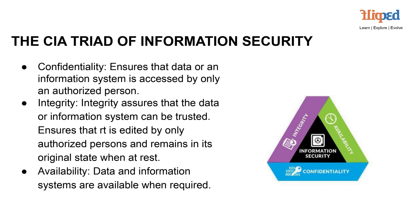As we dive deeper into the world of cybersecurity, let's explore a fundamental concept known as the CIA Triad of Information Security. Confidentiality stands as the first pillar — it guarantees that data or an information system is accessible solely by those who are authorized, guarding against unauthorized access. The second pillar, integrity, revolves around trustworthiness, ensuring that data and information systems are reliable and that only authorized individuals can make edits or modifications, with data remaining unaltered when at rest.